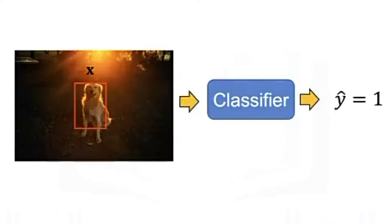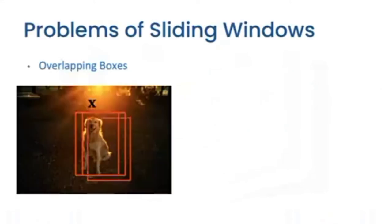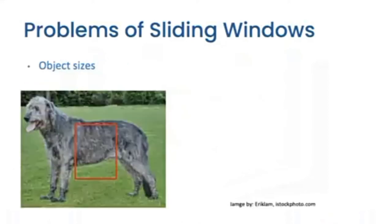But in addition to the problems with classification, there are additional problems specific to object detection. Object detectors often output many overlapping detections. We also have the issue of object sizes, where the same object can come in different sizes.